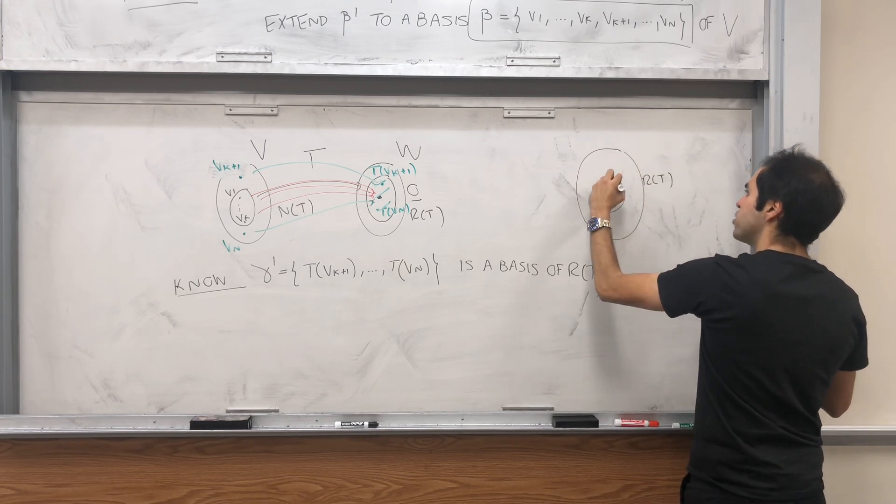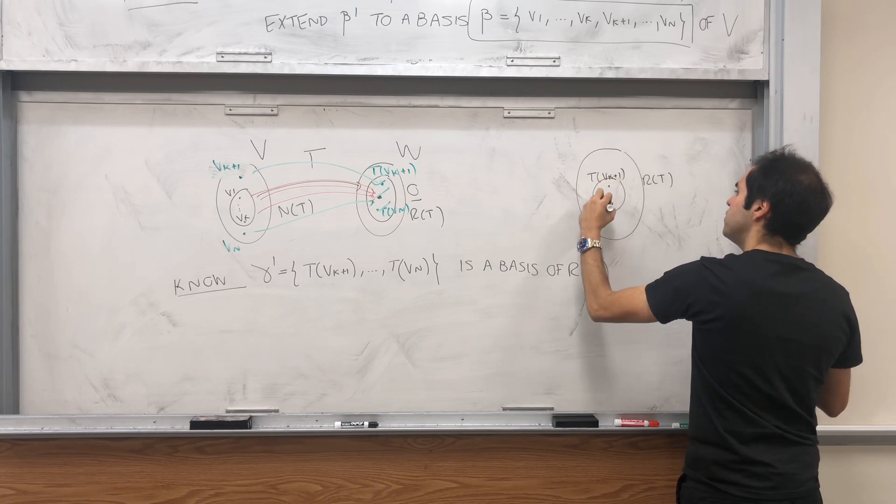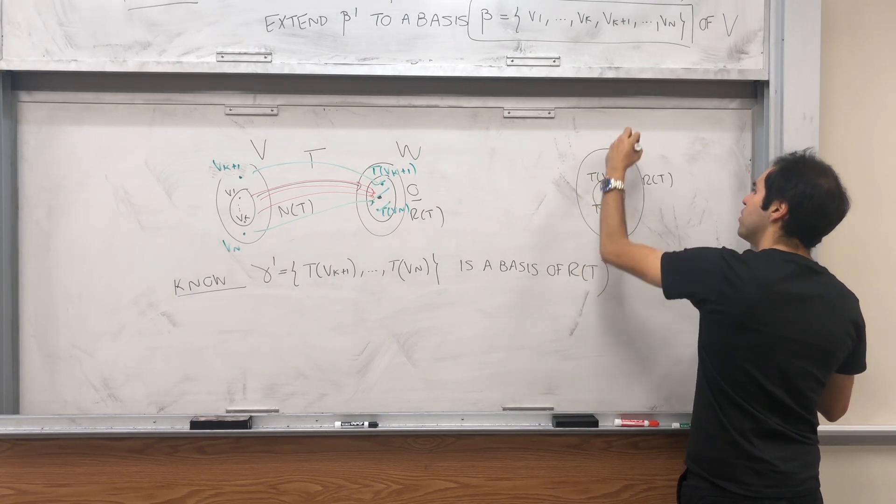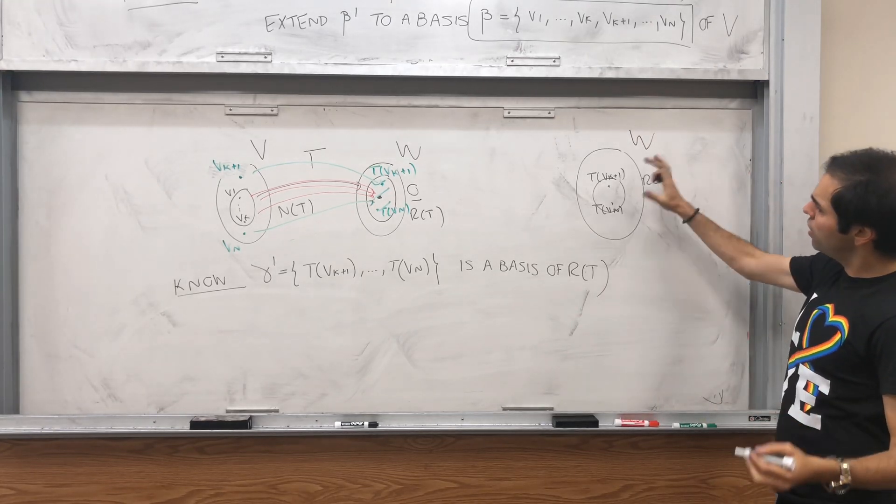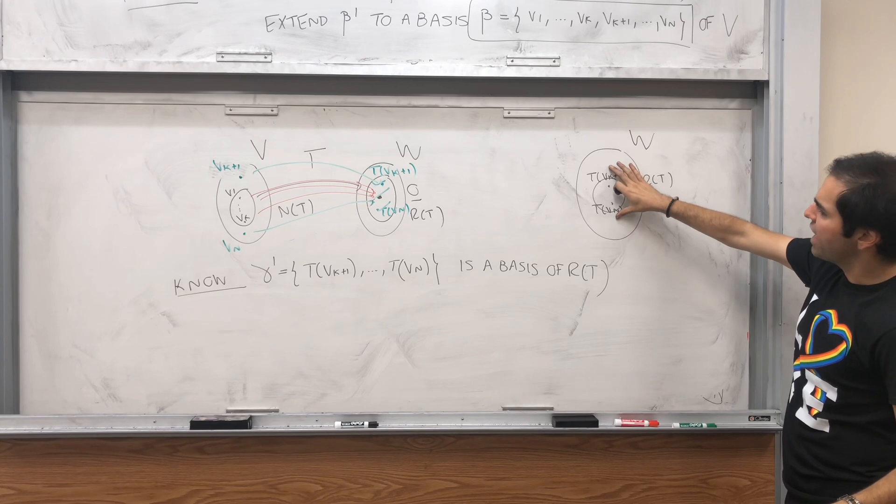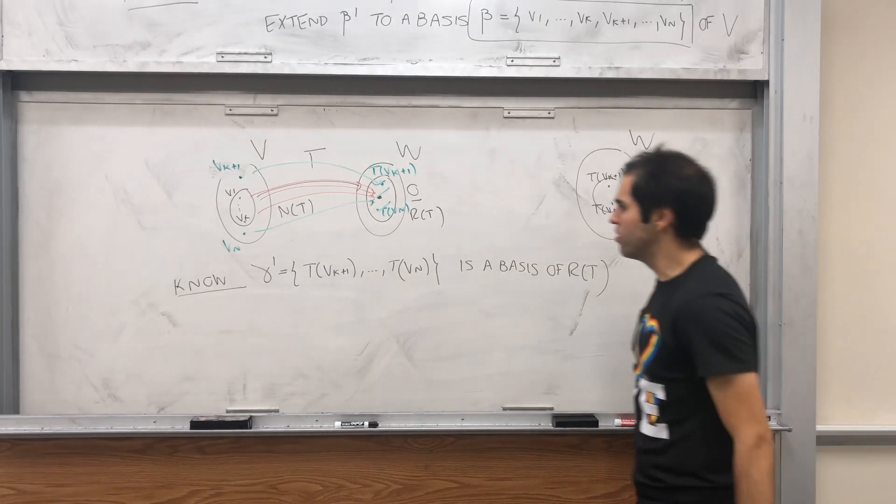Gamma prime, tvk plus 1 up to tvn, is a basis of the range of T. All right, so that's good. So we do get a basis for the range of T. So let me just read on this picture. That's tvk plus 1 up to tvn. But the problem is the range isn't necessarily the whole space W. So not a problem. Let's just extend those to a basis of W.